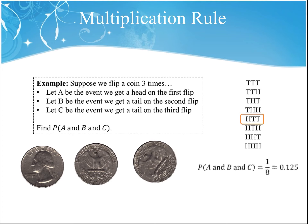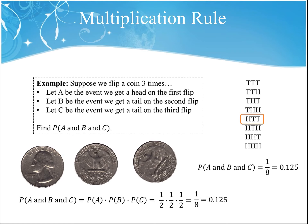We're going to use a shortcut in this section — the multiplication rule. You can also find the probability of getting heads and tails and tails by multiplying. The probability of flipping heads on a coin is 1/2, multiplied by the probability of getting tails on the second flip, 1/2, multiplied by the probability of getting tails on the third flip, 1/2. So 1/2 times 1/2 times 1/2 is 1/8, or 0.125. This multiplication rule is a different way of calculating probability instead of the classical method.